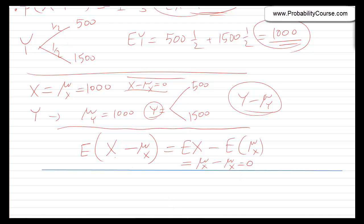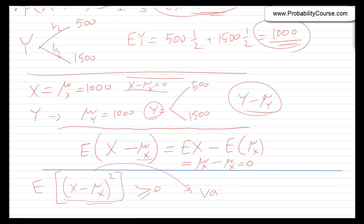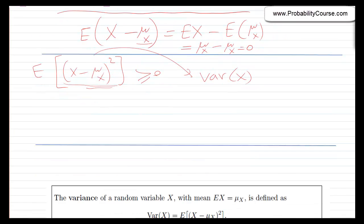The problem is that if you look at x minus mu for any random variable, sometimes x is larger than mu, sometimes smaller, so these cancel out and we always get 0. To avoid that, we can look at (x − μ_x) squared. This is always positive, and its expected value is always positive. This is what we define as the variance of a random variable x.